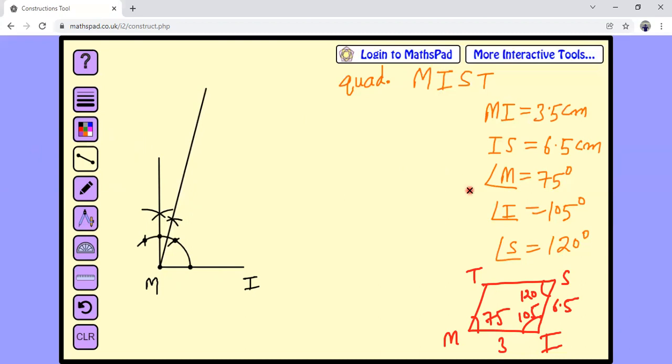So once you've drawn 75 degree angle, we have to draw another angle I, which is 105. To draw 105 degree angle at I, we will take, similarly, we will take a convenient arc, not too large, not too small, convenient one, and draw an arc.